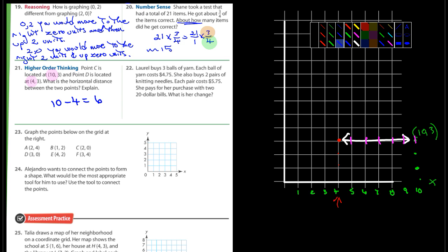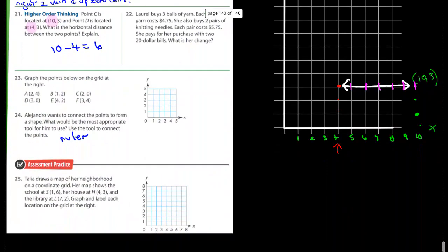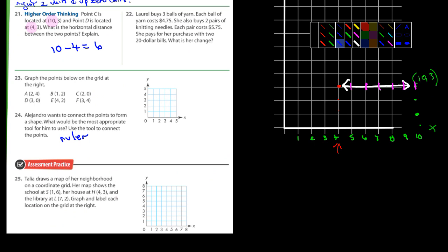Okay, 22, yeah you guys can do 22. 23, graph the points on the grid at the right, you can do that. And 24 wants to connect the points to form a shape. What would be the most appropriate tool for him to use? Use that tool to connect the points. Well this is going to be pretty small in your book, it's not very big. So I think what they're saying, if this was a much larger like on a piece of paper, it would be a ruler. Okay, or really any kind of straight edge is fine. And then it says use the tool to connect the points, so go ahead and connect the points. And then finally 25, yeah you guys can do that.